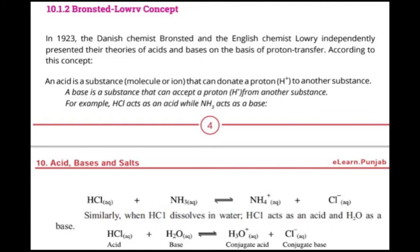What is a proton? Protons are described as species or ions that have no electron in them. Hydrogen, with atomic number 1, has one proton and one electron. When hydrogen loses its electron, it becomes a bare proton with no electrons remaining.